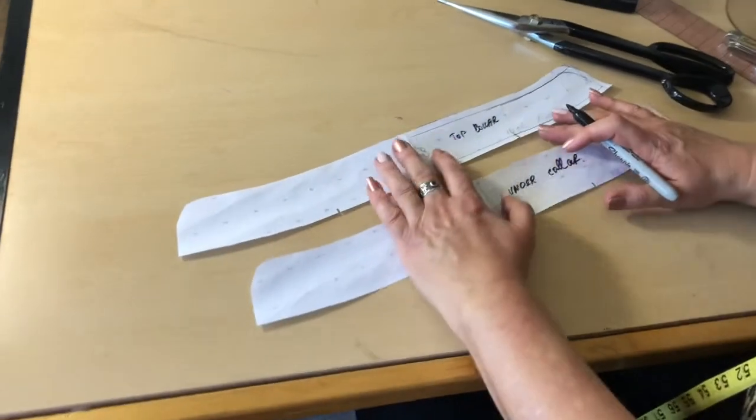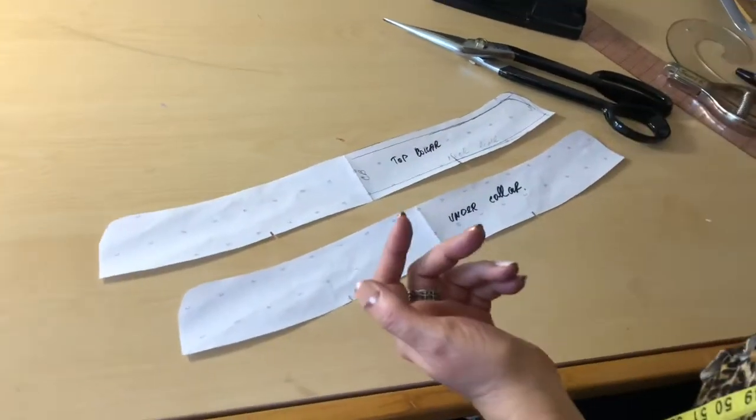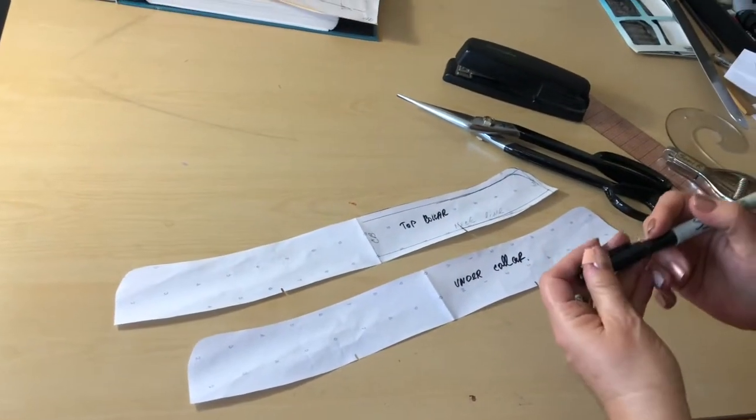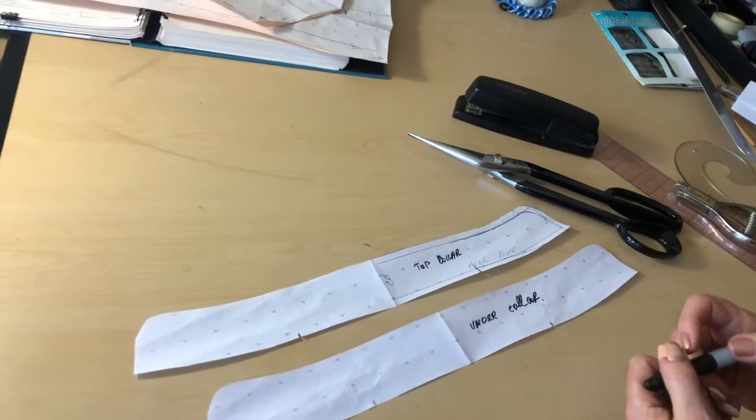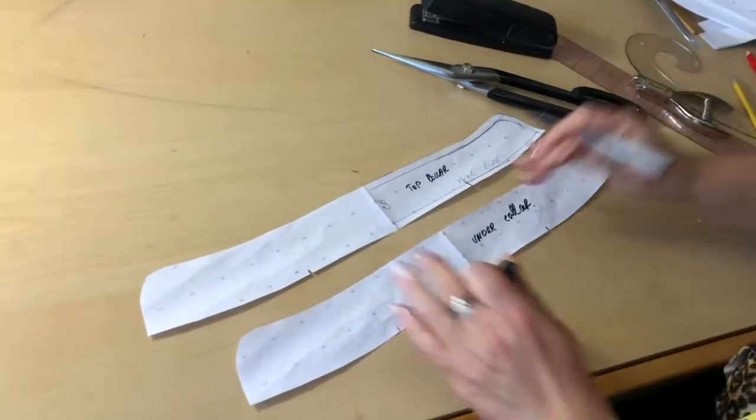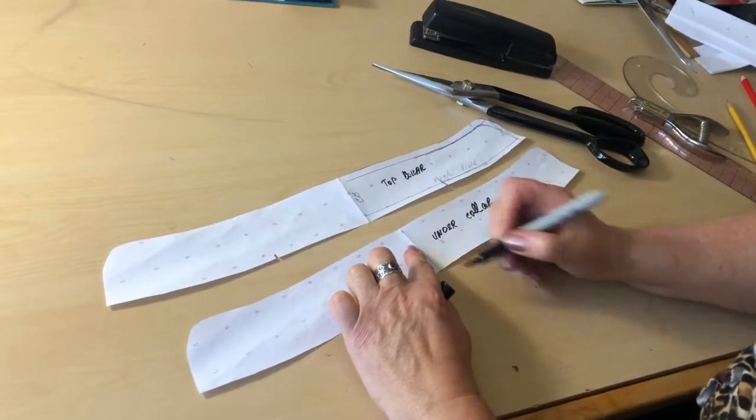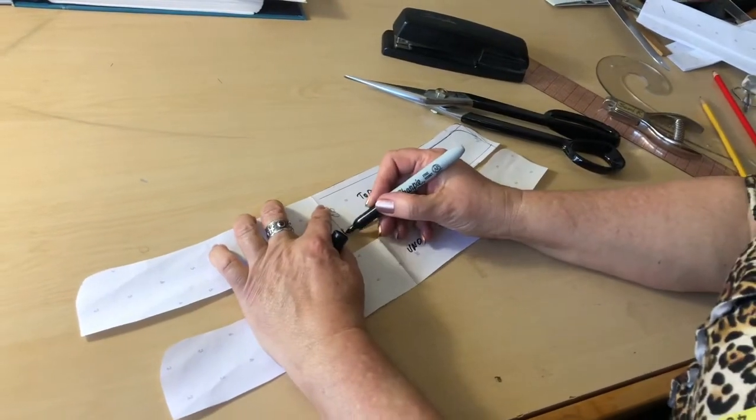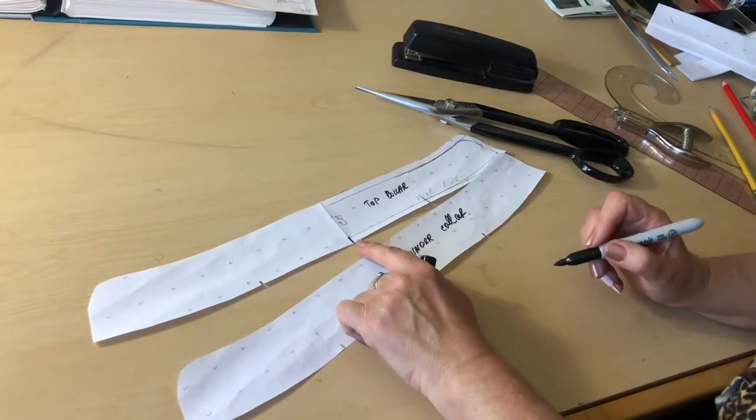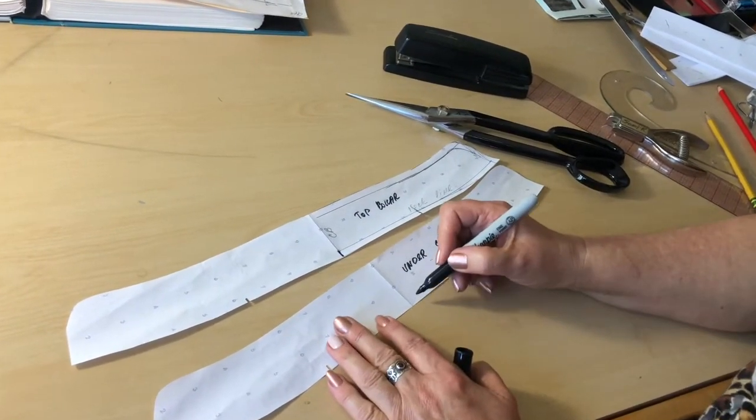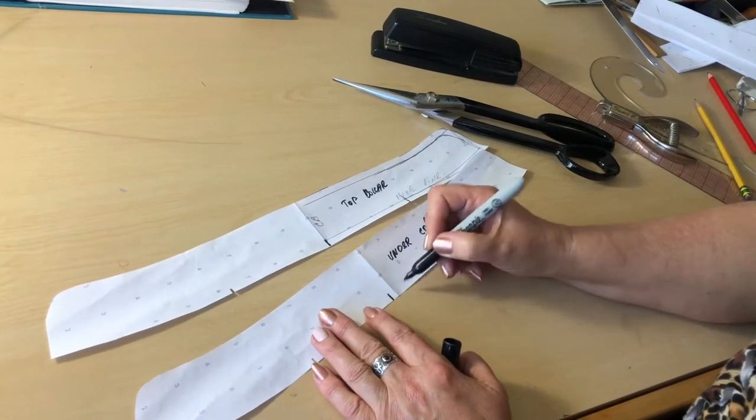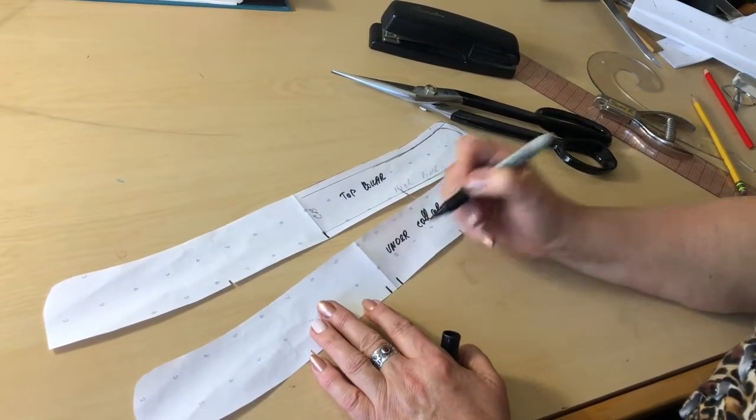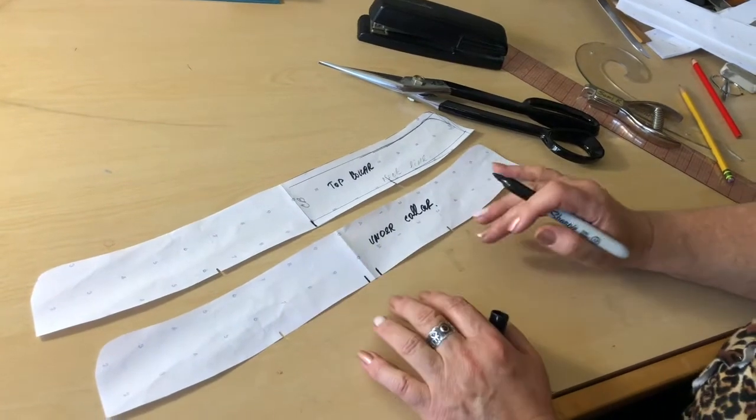Sometimes in production they will cut just the top collar and say cut two, but we want to learn how these collars are notched for production. What they would do is for the top collar they will place one notch at the center front, sorry center back and for the under collar at the center back they will go quarter inch away put one notch and another notch.